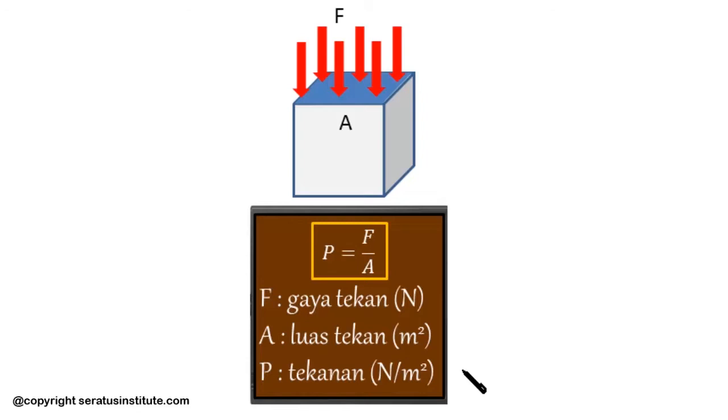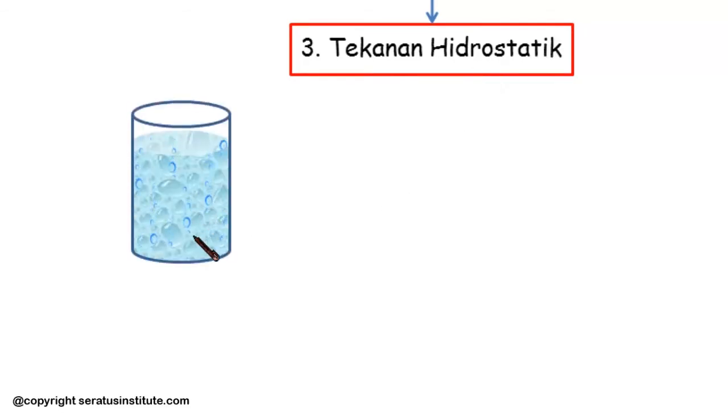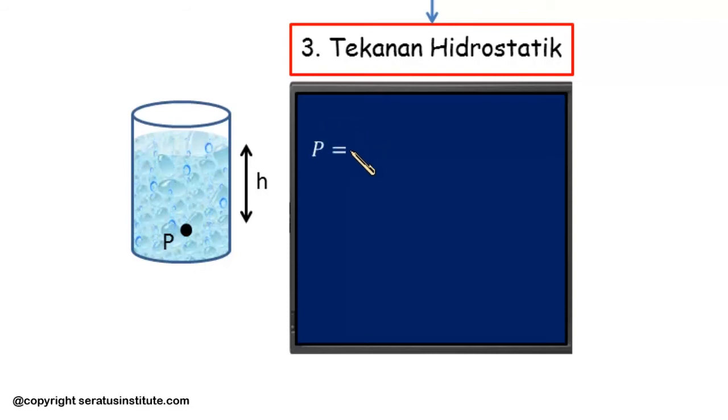How does this relate to fluid statics? The pressure discussed earlier was pressure in general. The connection with fluids is that there's something called hydrostatic pressure. The illustration here is I'll draw a cylinder containing liquid. Then suppose we want to examine the pressure at a point measured as deep as H from its surface. How large is the hydrostatic pressure? If we derive from the pressure equation P equals F per A, where F here is the weight of the liquid, which is M times G per A.